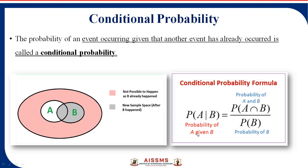When you calculate the probability of A given B, it means event A has already occurred, and you want to know the chances of event B. So probability of A given B equals probability of A and B divided by probability of B. This is conditional probability.